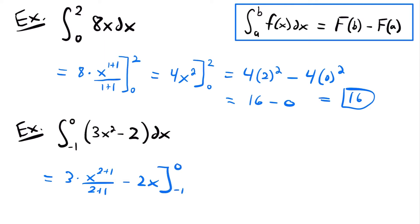We used the power rule on our first term — we added 1 to our exponent for x squared and then divided by that new exponent, so we have x to the power of 2 plus 1 divided by 2 plus 1. When you take the integral of a constant, you just multiply it by x, the variable of integration. If we simplify, 3 divided by 3 will cancel out, and we'll just be left with x cubed minus 2x, evaluated from negative 1 to 0.